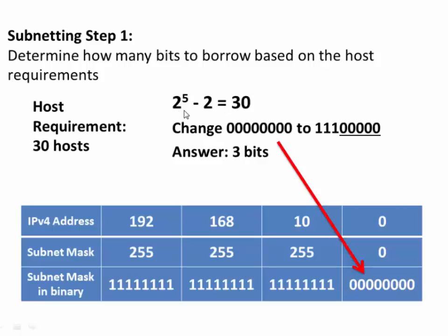2 to the 5th power is 32, minus 2 equals 30, so this gives us 30 usable hosts. The answer to Step 1 is we need to borrow 3 bits from the host portion, changing the last octet from 8 zeros to 111.00000.